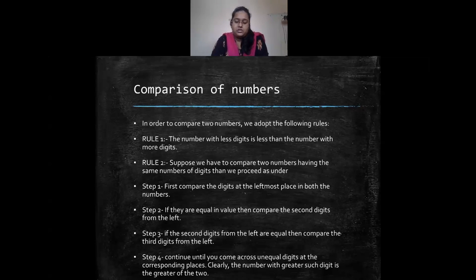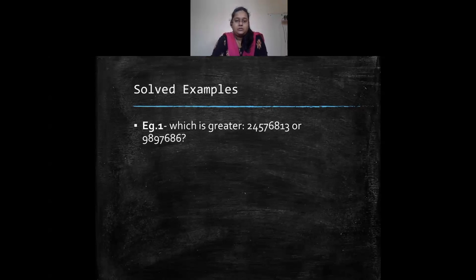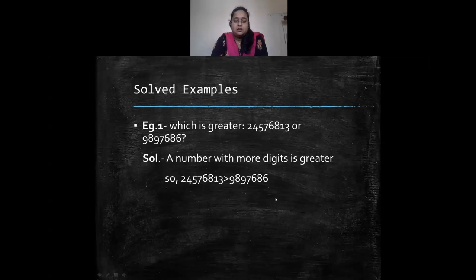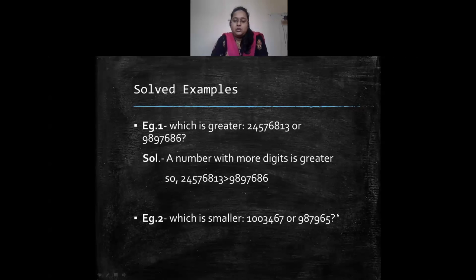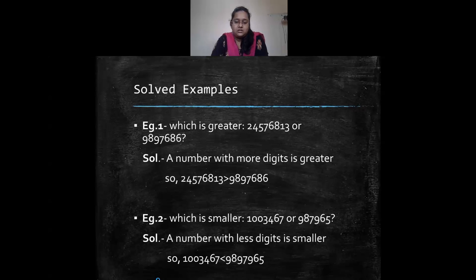If you reach the ones place and the digits are unequal, the number with the smaller digit in the ones place is the smaller number. If all digits in both numbers are the same, the numbers are equal. For example, if the first number has eight digits and the second has seven digits, the first number is greater.